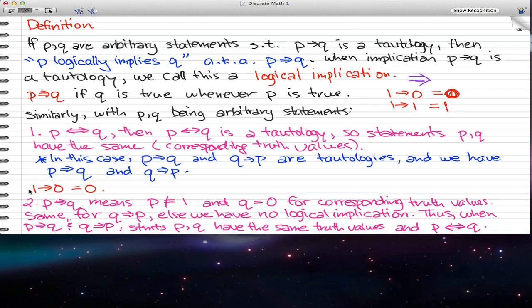Now, remember that I just said that the only time when an implication is false, but I'm saying it again for emphasis, is 1 implies 0. That will give us a 0. And the second thing that we got to worry about is P logically implies Q means that P can never be 1 and Q can never be 0 for the corresponding truth values, because that will give us a 0, and that is not wanted, right?